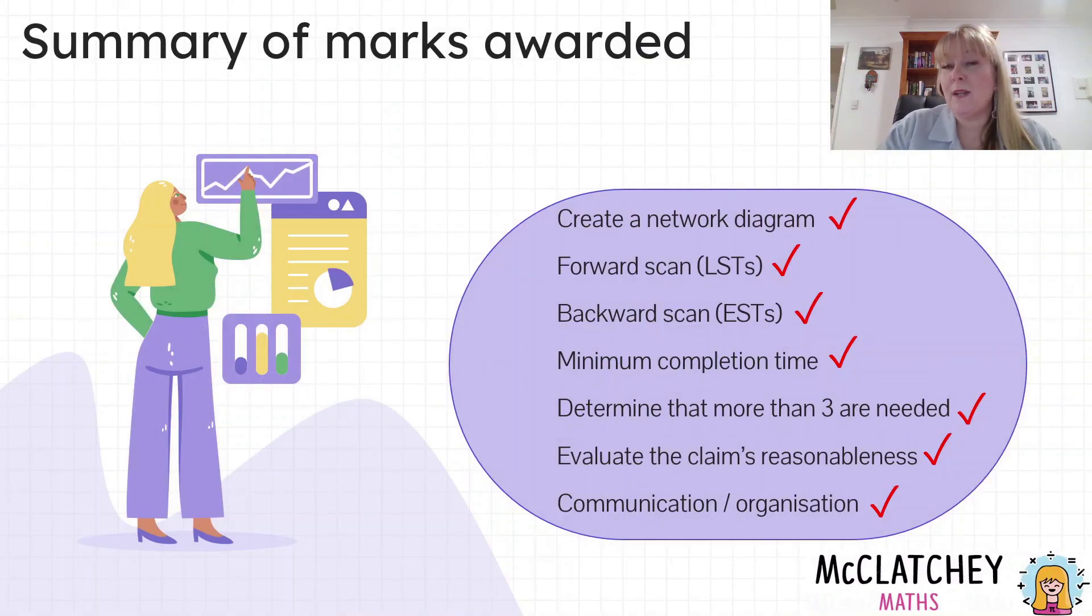Let's have a quick summary of where all those marks were awarded. Firstly with that network diagram, then the forward scanning and the backwards scanning, so three marks just for your diagram. Then stating what the minimum completion time was, so it's not enough to just have the 14 at the end twice. You actually have to be explicit about how much time it will take to complete the project. Determining that you needed more than three and saying no, the claim is not reasonable, was also part of your evaluation. The timeline needed in there as well, some sort of method that you use to prove it, and then your communication and organization of your work for a total of seven marks. This particular question, even though it's not super hard, actually requires a bit more of that complex thinking because a lot of students will be tempted to stop after they've drawn their network diagram and just assume that three is enough, and that's why it's awarded more marks. It was one of the most heavy mark awarded questions on both papers.